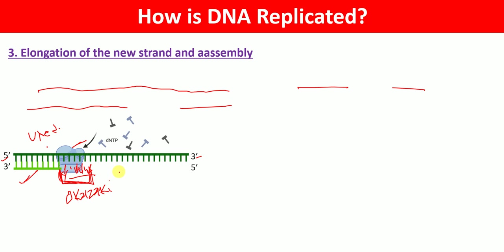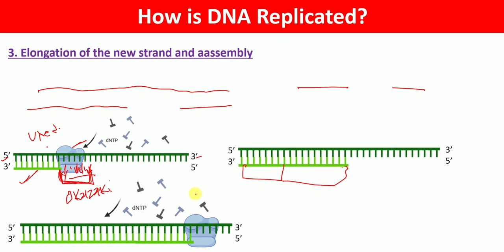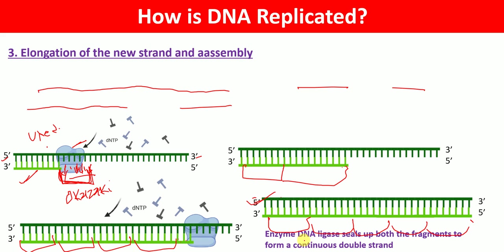DNA polymerase adds one fragment, then another, and then another. So here we have the primer, one fragment, a second fragment, and a third fragment — all Okazaki fragments. Finally, all the fragments are added to the template strand, and the enzyme called DNA ligase seals up all the fragments to form a continuous double strand.